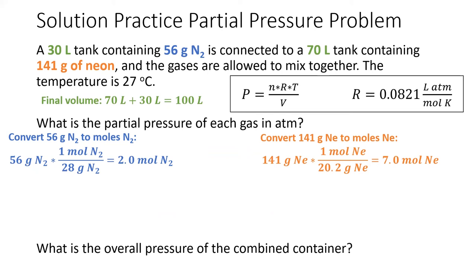Once you get moles of each gas, there are two different ways to solve the problem. The first way I solve it, we'll use PV equals nRT for both gases to calculate their partial pressures.